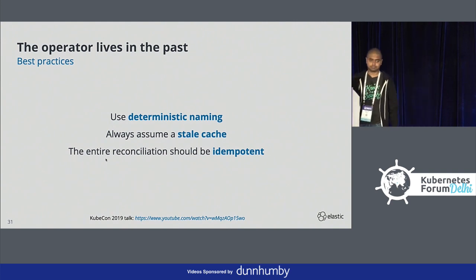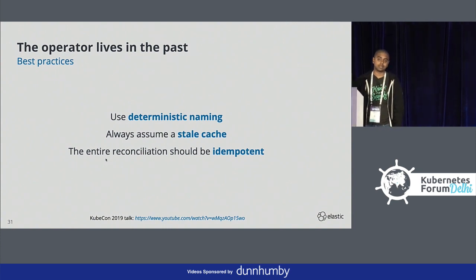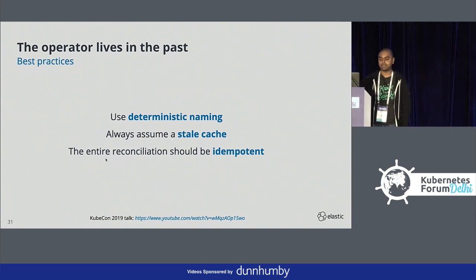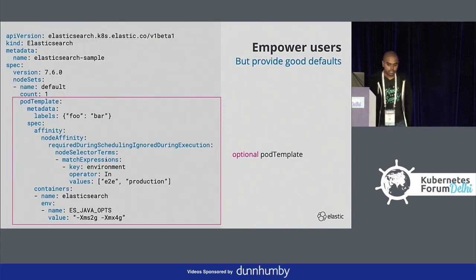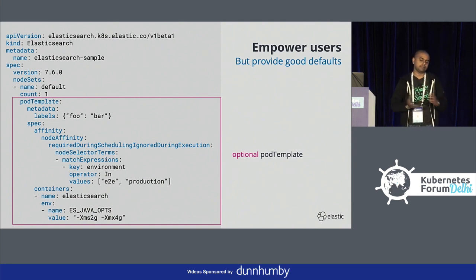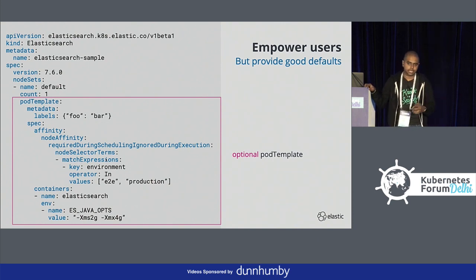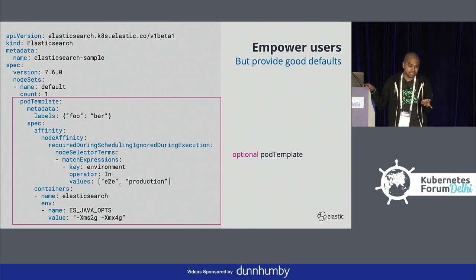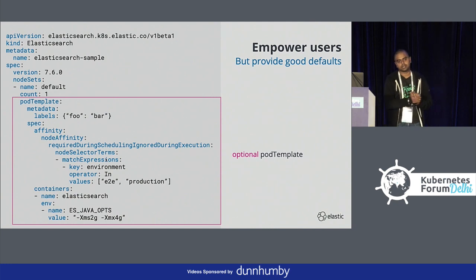These are some best practices — there might be more as we develop for different platforms at large scale. It's also important to empower users: a lot of people have specific pod templates mandated by their security teams, so we offer them a structure where they can assign node affinity rules, desired RAM consumption rates, and other configurations — not just defaults.